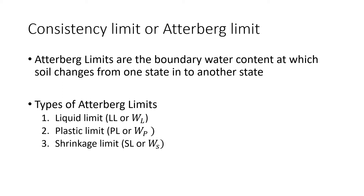Consistency limits are the boundary water contents at which soil changes from one state into another — for example, from liquid state to plastic state. Based on this, there are 3 types of Atterberg limits: liquid limit, plastic limit, and shrinkage limit.